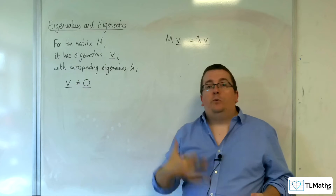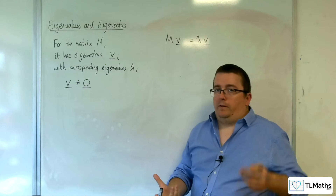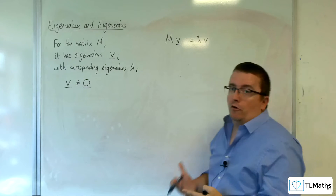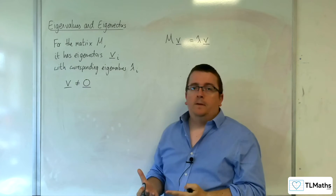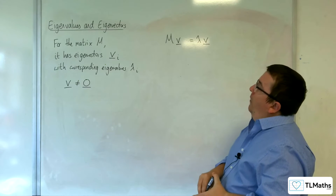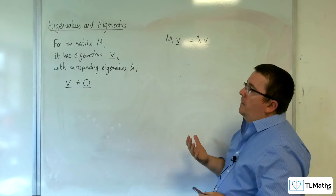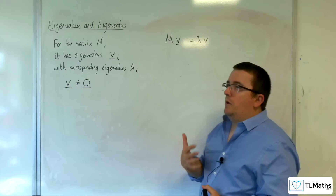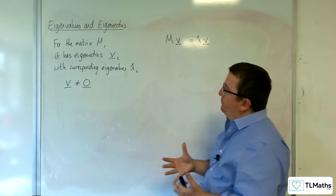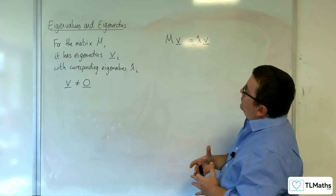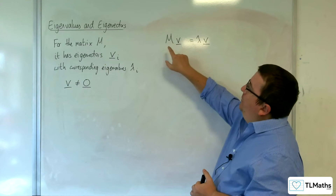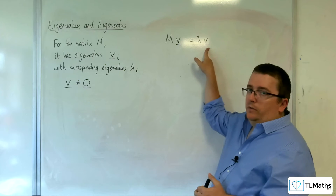That eigenvalue won't be 0, otherwise it would be bringing all the points on that line to the origin. So we can say then that MV is equal to lambda times V.